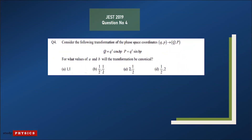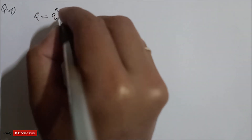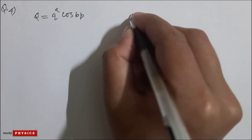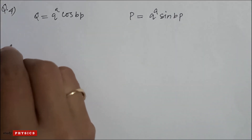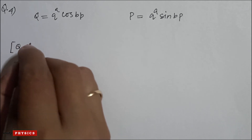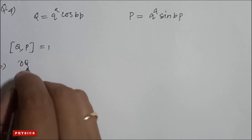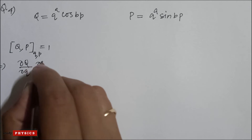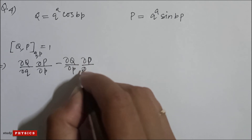Question 4: consider the transformation of phase space coordinates (q, p) to (Q, P) where Q = q^α cos(bp) and P = q^a sin(bp). For what values of a and b will the transformation be canonical? For canonicality, the Poisson bracket {Q, P} must equal 1. So (∂Q/∂q)(∂P/∂p) − (∂Q/∂p)(∂P/∂q) = 1.